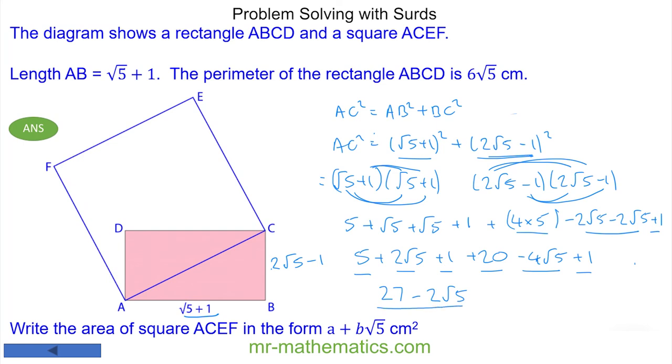So this would be the area of the blue square, which is AC² = 27 - 2√5. So a equals 27 and b equals negative 2.